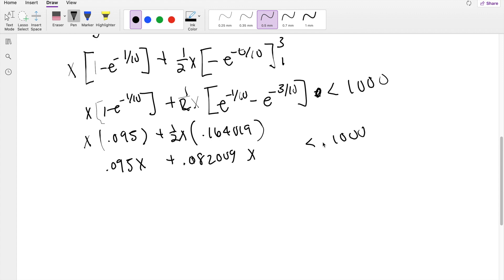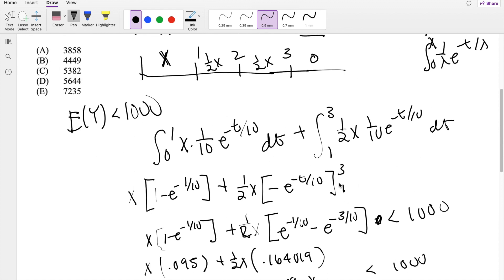So that is equal to 0.17717X less than 1,000. So then X must be less than 1,000 divided by that number, which is 5,644, which is approximately equal to D.